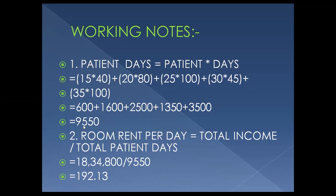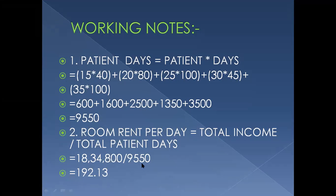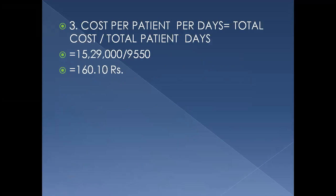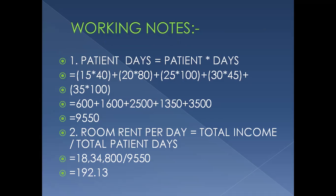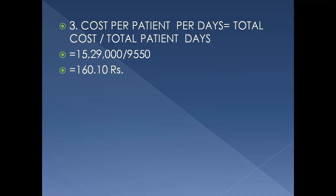The total Patient Days amount comes to 9550. Working Note 2 — Room Rent Per Day is equal to Total Income divided by Total Patient Days. Total Income is 4,800 (in thousands), divided by 9550, which gives 192.13.